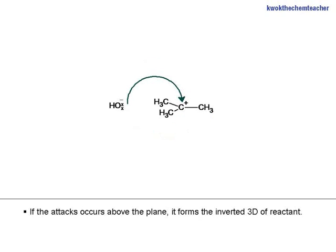If the attack occurs above the plane, it forms the inverted 3D structure of the reactant. This direction is opposite side to which X has left.